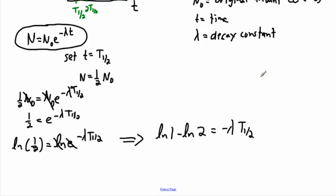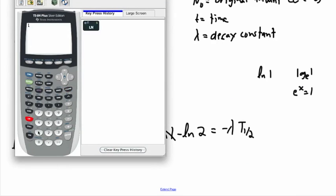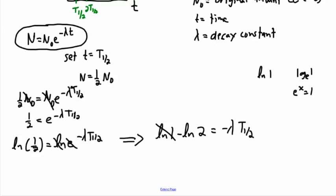Natural log of one — what is that? It's like asking log base e of one, meaning e to what power equals one? The answer is zero, because e to the zero equals one. So natural log of one is zero — it cancels out. You can verify this on your calculator. So I'm left with minus ln two equals minus lambda t one-half.